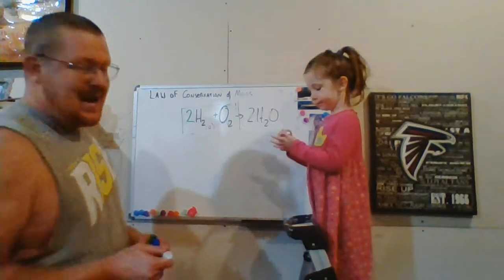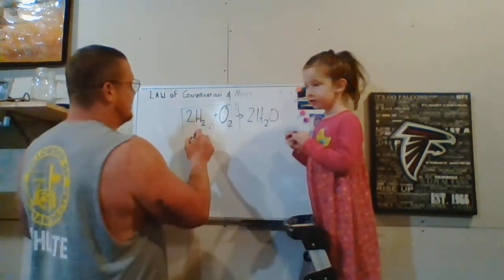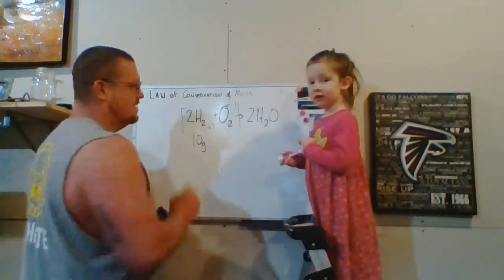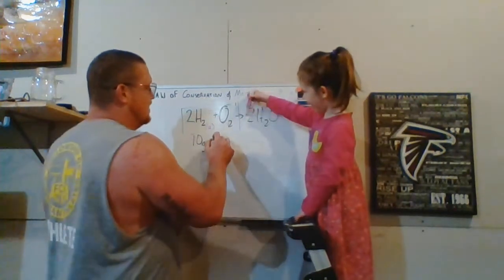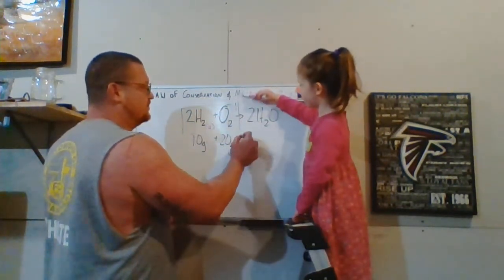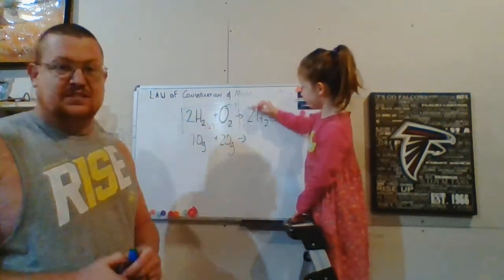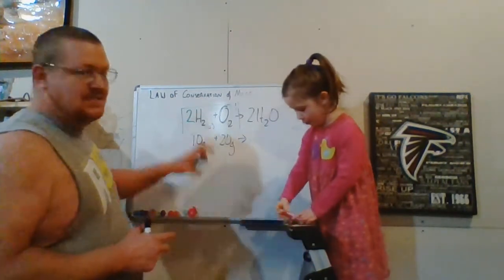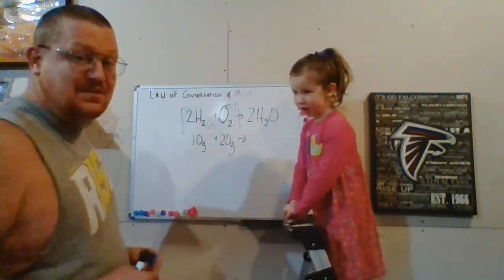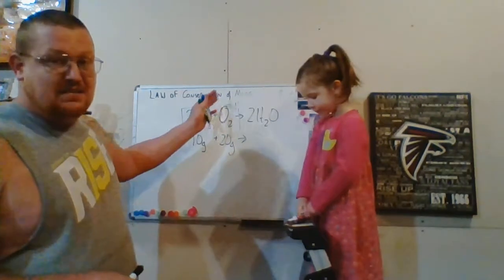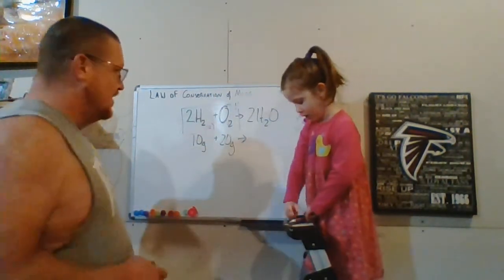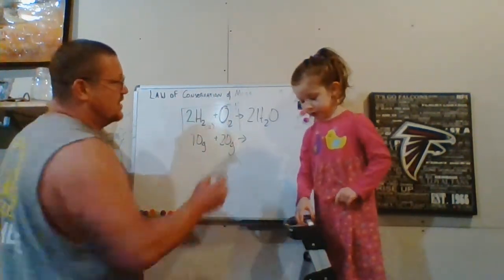Another way to look at this is mass. Let's say we had 10 grams of hydrogen gas, 20 grams oxygen gas. So if we combine these together in the reactants we have a total of 30 grams of mass. Law of conservation of mass says we must also have 30 grams of mass.